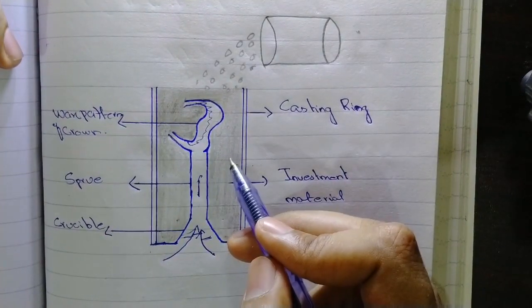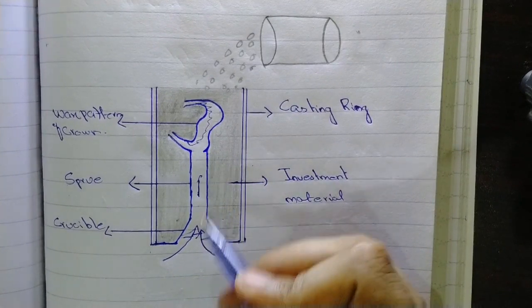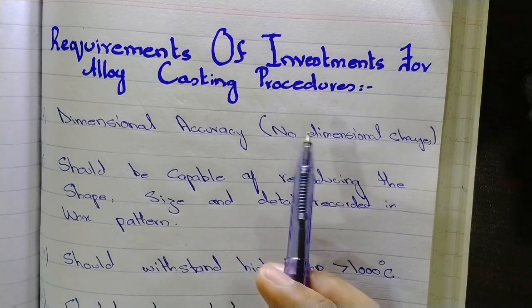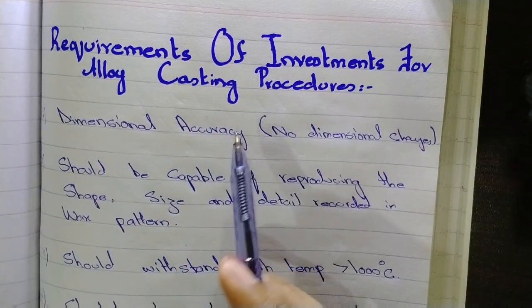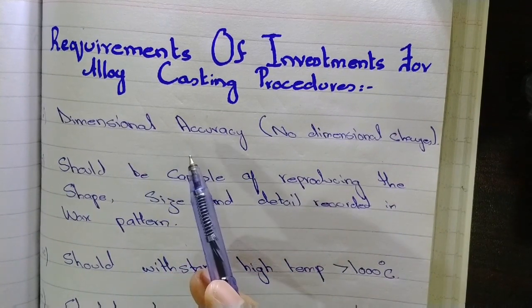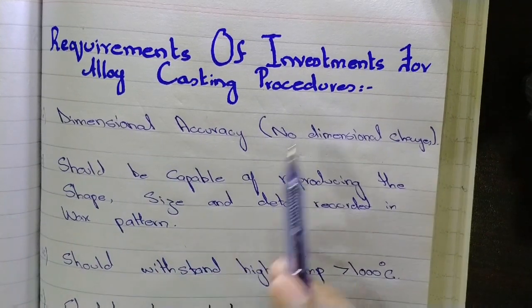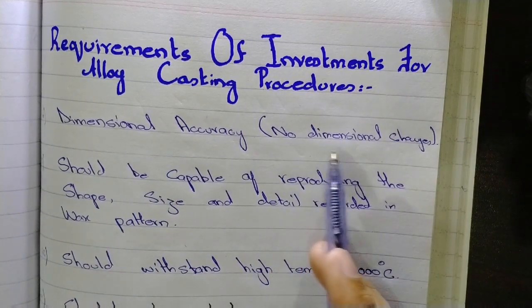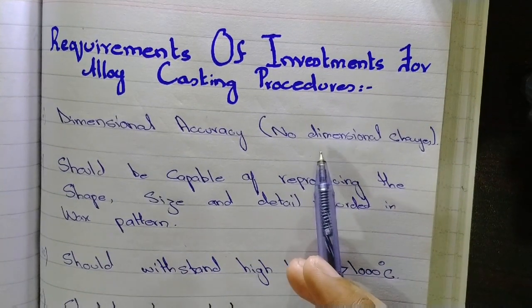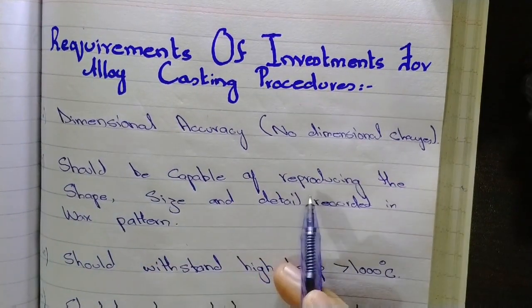Now the requirements of investments for alloy casting procedures. The investment material should be dimensionally stable - it should have dimensional accuracy with no dimensional changes occurring before and after setting. Investment materials should be capable of reproducing the shape, size, and detail recorded in a wax pattern.